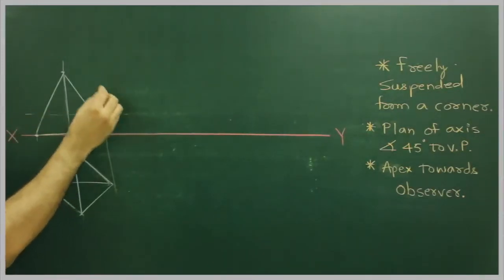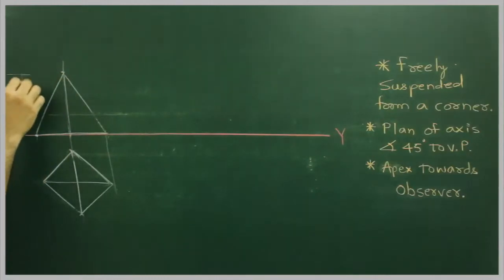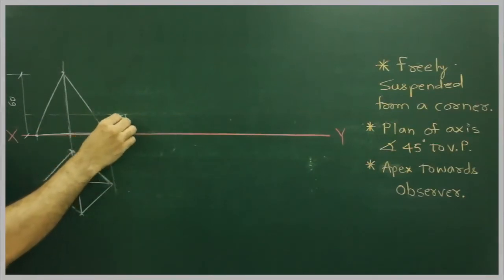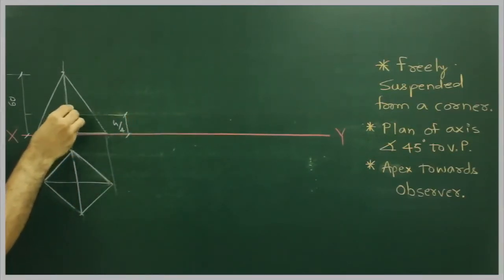So first we need to find out center of gravity. That is, if total height is let us say 16, so this would be h by 4. So this is center of gravity.